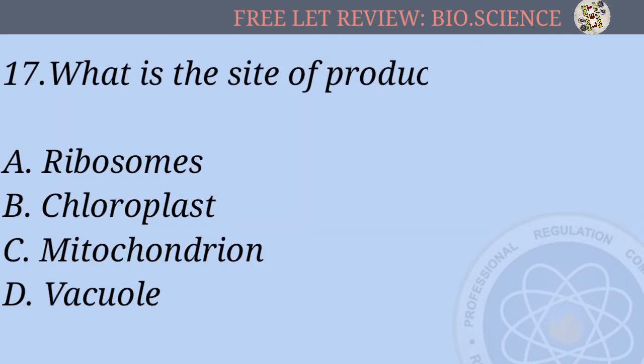Number 17: What is the site of production of ATP? A) ribosomes, B) chloroplast, C) mitochondrion, D) vacuole.